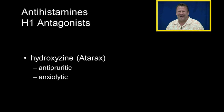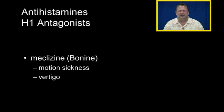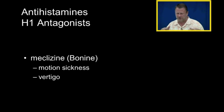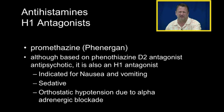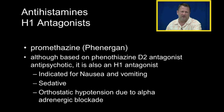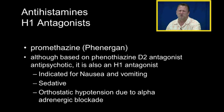Hydroxyzine (Atarax) is also an excellent anxiolytic. Meclizine (Bonine) is excellent for stopping motion sickness and vertigo — the sensation of movement when no movement is occurring. Promethazine (Phenergan) is based on D2 antagonist antipsychotics and also has H1 antagonism properties. It is used for nausea; for example, it can be given with Demerol (an opioid analgesic) to prevent nausea and vomiting caused by opioids.